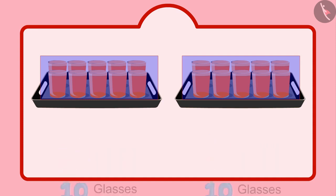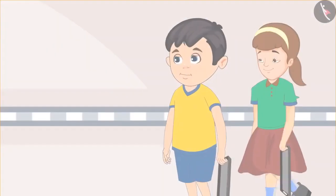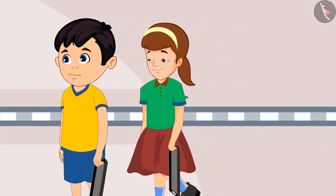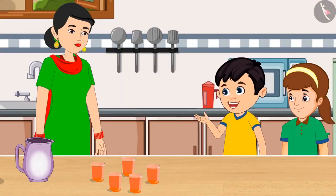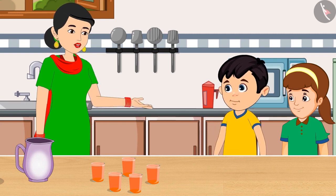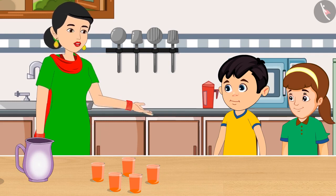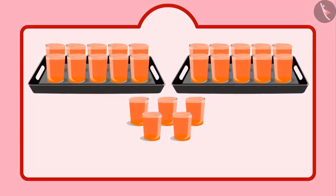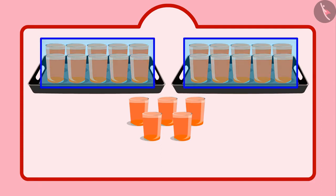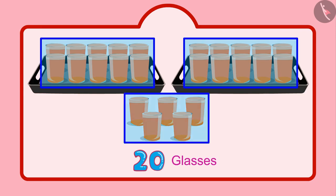Together, Chotu and Aarti distributed all the glasses filled with sherbet. But they need more sherbet now. Mummy, give us some more glasses of sherbet. Okay, Chotu, here you go. I have made some more sherbet. Keep it in this plate and take it outside. Children, Chotu distributed 2 groups of 10 glasses, that is 20 glasses of sherbet, and then 5 more glasses.